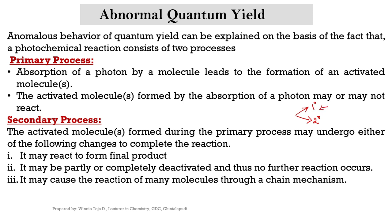The primary process is that one molecule absorbs one photon of light radiation. Absorption of a photon by a molecule leads to the formation of an activated molecule. The activated molecule formed by the absorption of a photon may or may not react.